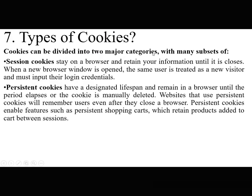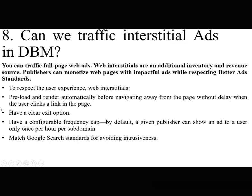Types of cookies: cookies can be divided into two major categories. Session cookies stay on the browser and retain your information until it closes; when a new browser window is opened, the same user is treated as a new visitor and must re-enter their login credentials. Persistent cookies have a designated lifespan and remain in a browser until that period elapses or the cookie is manually deleted, enabling features such as persistent shopping carts which retain products added between sessions.